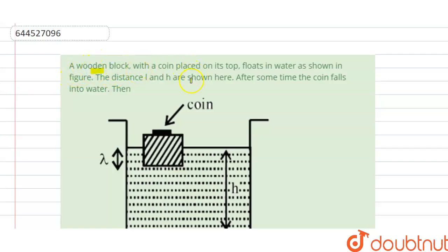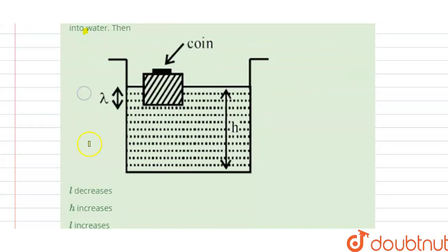A wooden block with a coin placed on its top floats in water as shown in the figure. The distances l and h are shown here. After some time, the coin falls into the water. Then we have...